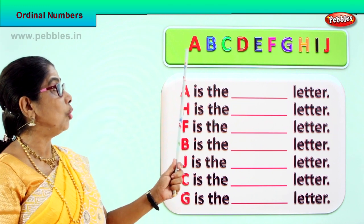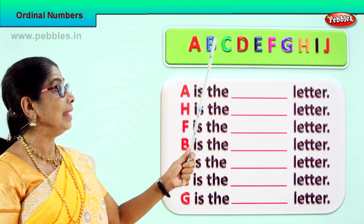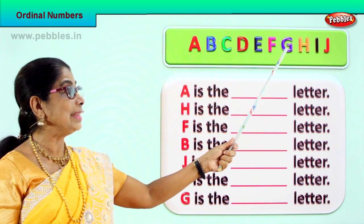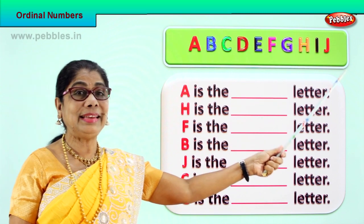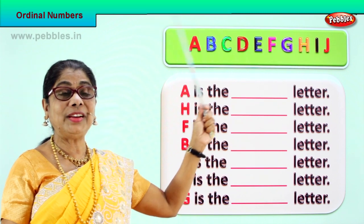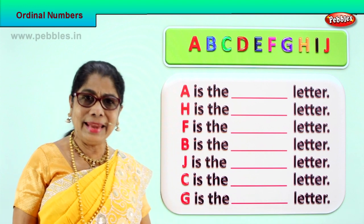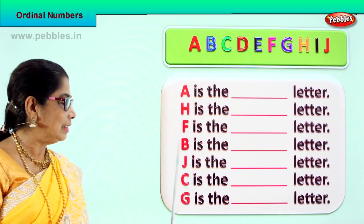So we have ordinals: first, second, third, fourth, fifth, sixth, seventh, eighth, ninth, tenth — first to tenth. Now we have a few letters here. Let's see the ordinal position of each.